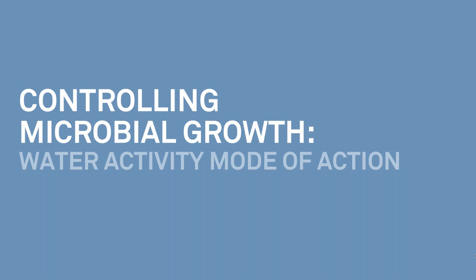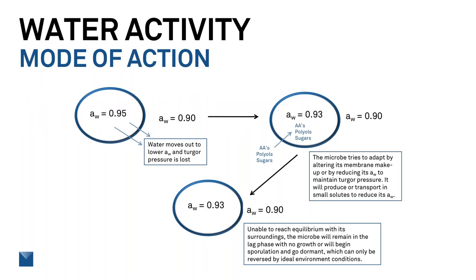How does water activity actually control microbial growth? Here I have an oval representing our microorganism, with an interior water activity of 0.95, and the environment it's in is at 0.90. From thermodynamics, if there's a difference in water activity, there's a difference in energy level, and water wants to move from high to low to equilibrate. The water inside that microbe is going to leave, and as it does, turgor pressure is lost, stressing the microorganism.